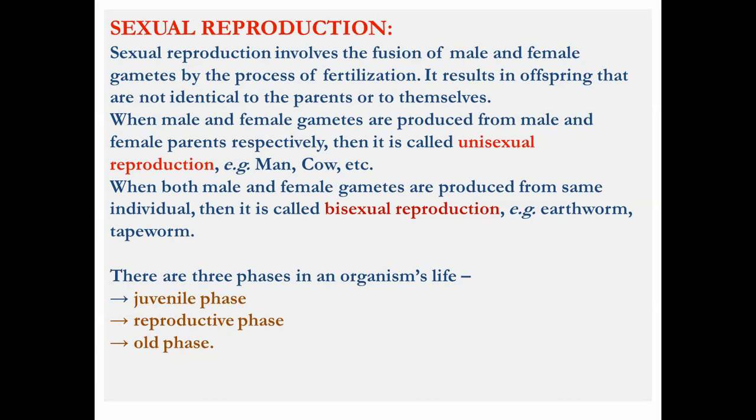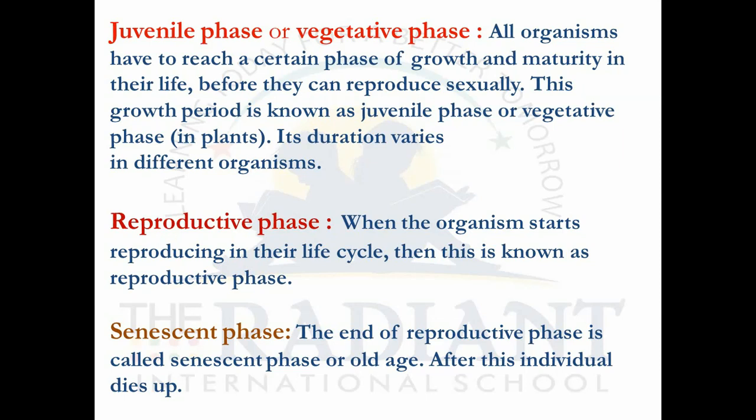There are three phases in an organism's life with respect to reproduction. With respect to reproduction, the whole lifespan of every individual is divided into three different phases: juvenile phase, reproductive phase, and old phase (senescent phase). The first is juvenile phase, which in the case of plants is called vegetative phase. All organisms have to reach a certain phase of growth and maturity in their life before they can reproduce sexually.